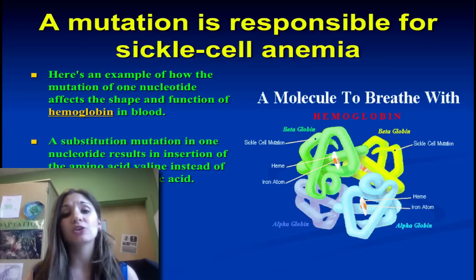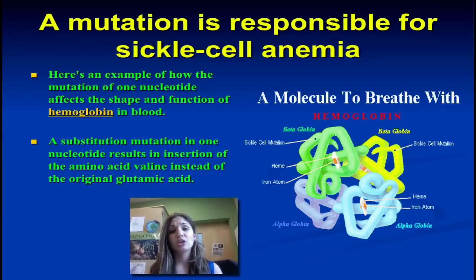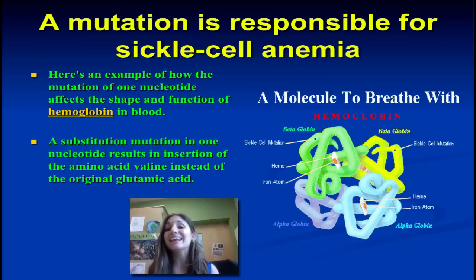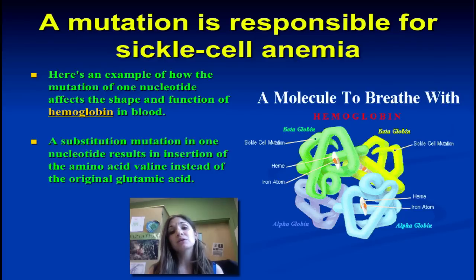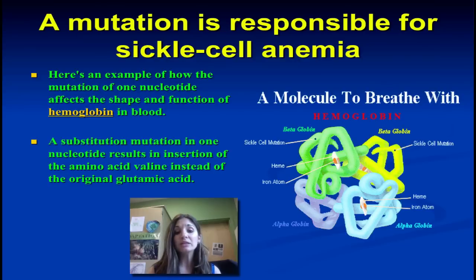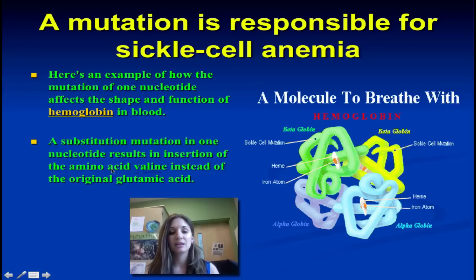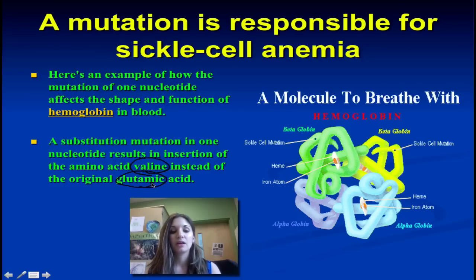Hemoglobin, as you recall, is a molecule responsible for carrying oxygen in your red blood cells and transporting it around your body. Hemoglobin functions beautifully — it's highly conserved throughout the animal kingdom because it does function so efficiently. However, there is a simple, small substitution in a single nucleotide, a single point mutation, within the normal hemoglobin molecule which gives rise to the disease sickle cell anemia. Substituting valine instead of the original glutamic acid causes the protein hemoglobin to now have a hydrophobic pocket.